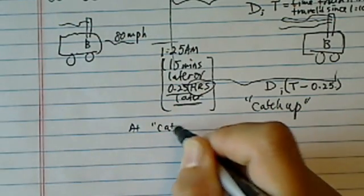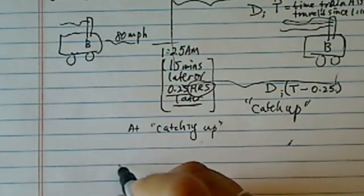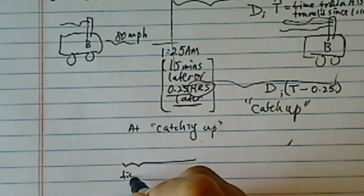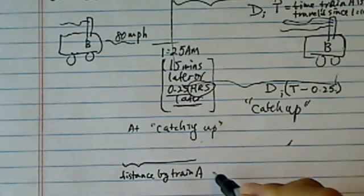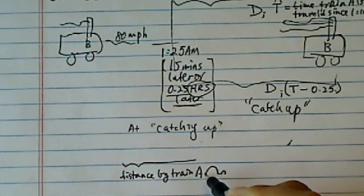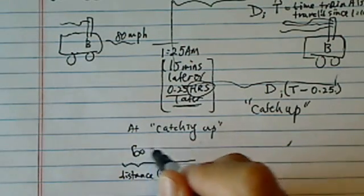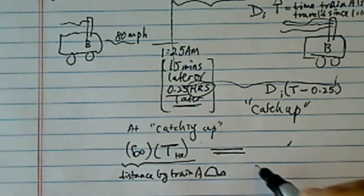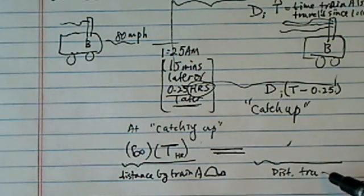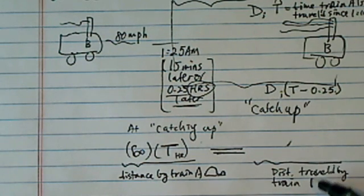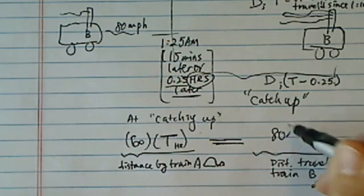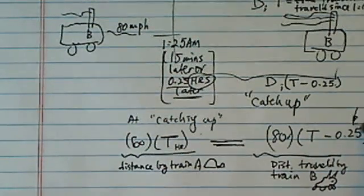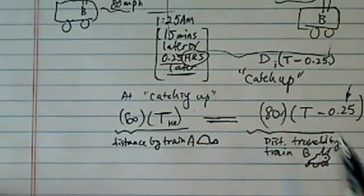Now next thing that's really easier than that, at catching up, when they're actually caught up, the distance traveled by train A, that's the slow one. So I'm going to attempt to draw a turtle here. Train A travels 60 miles per hour. They travel T hours. Let's put our units here. It's equal to, when they caught up, the distance is equal to the same as distance traveled by train B, which is the faster one. Let's draw our bunny rabbit here. It's going to be a horrendous bunny. Poor bunny. But you get the picture. So this is 80 miles per hour, and you travel T minus 0.25. Once again, this is 0.25 because we've got to get the units consistent.